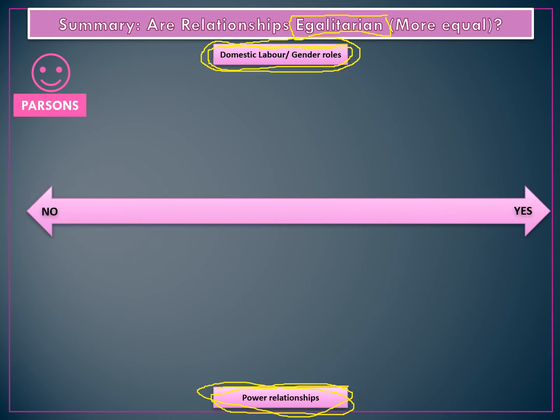Our first thinker is Parsons. Parsons talks about divisions within the home: men take on the instrumental role and women have the expressive role. Men are the breadwinners going out to work; women are the caregivers who raise the children and stay at home, due to biological differences between men and women. For Parsons, this is normal, natural, and ideal — he thinks this segregation is good and that domestic division of labour should be unequal because of how men and women have been biologically designed. This comes from a functionalist perspective.